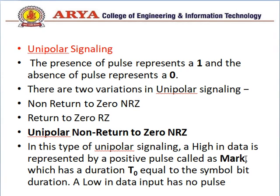Unipolar signaling method: the presence of a pulse represents a 1 and the absence of a pulse represents a 0. There are two variations on unipolar signaling: Non-Return to Zero (NRZ) and Return to Zero (RZ). In NRZ unipolar signaling, a high input data is represented by a positive pulse, which has a duration T0 equal to the symbol bit duration.